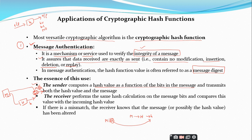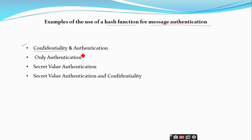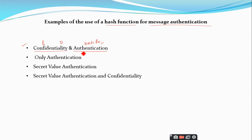There are various examples of hash functions used for message authentication. The first example provides both confidentiality and authentication. When you come across authentication, it is achieved using the hash function. When you come across confidentiality, it uses the concept of encryption at the sender side and decryption at the receiver side, denoted as E and D respectively.